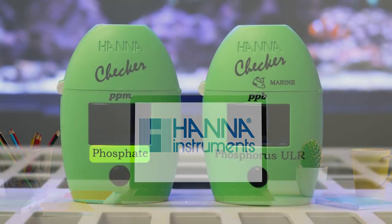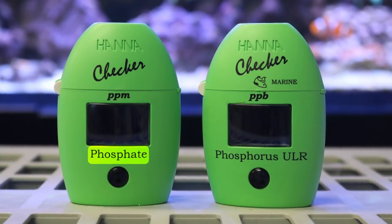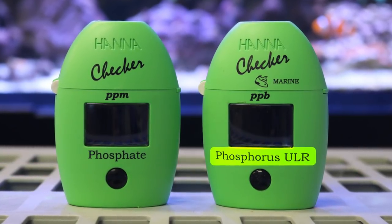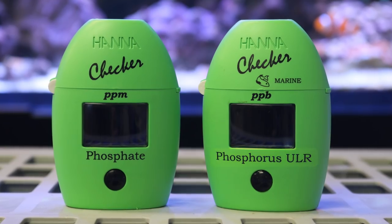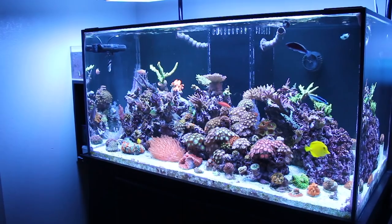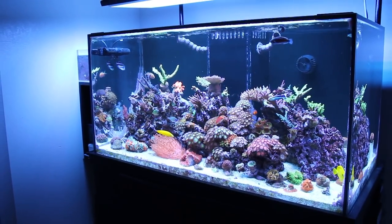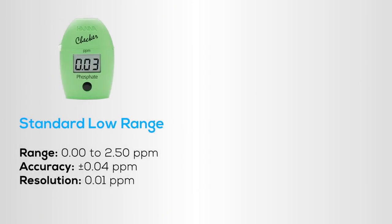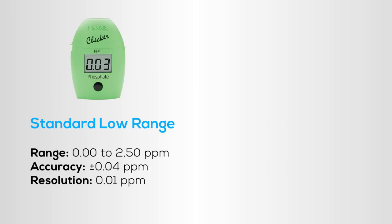Hanna offers two different checkers, the Low Range Phosphate and the Marine Ultra Low Range Phosphate Colorimeter, both of which operate similarly and are easy to use. These will let you know exactly what kind of phosphate levels you are dealing with. Check out our videos on phosphates in the links below to get a better idea of what these levels can indicate. The standard Low Range Phosphate Checker will be more than enough for most aquarists.